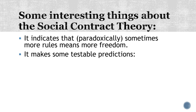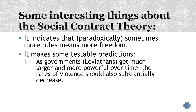Social contract theory also makes testable predictions. As governments — leviathans — get larger and more powerful over time, rates of violence should substantially decrease. If you listen to your availability bias, you might think that hasn't happened and that violence rates are as high as ever. But if you look at the actual data, you're living in the most peaceable time in human history — and it's not even close. Rates of violence have plummeted as governments have gotten larger and better organized, both interpersonal violence and warfare. Steven Pinker, the author of Rationality, wrote a whole book called The Better Angels of Our Nature about exactly this trend.